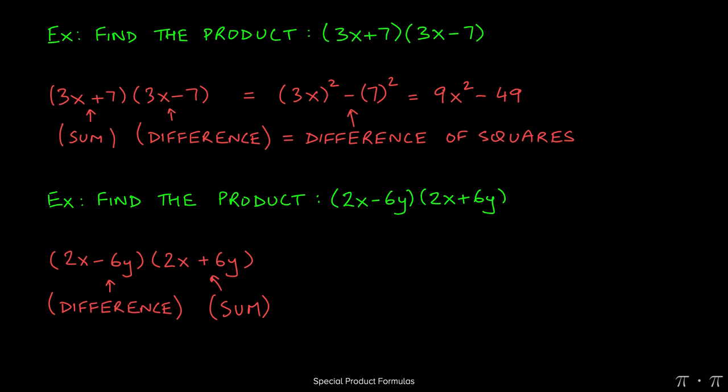Even if the terms are out of order where the difference is first and then the sum comes second, this is still equal to the difference of squares as a product. So squaring the first term will give us 2x quantity squared minus, because of the difference of squares, the second term squared, which is 6y quantity squared.